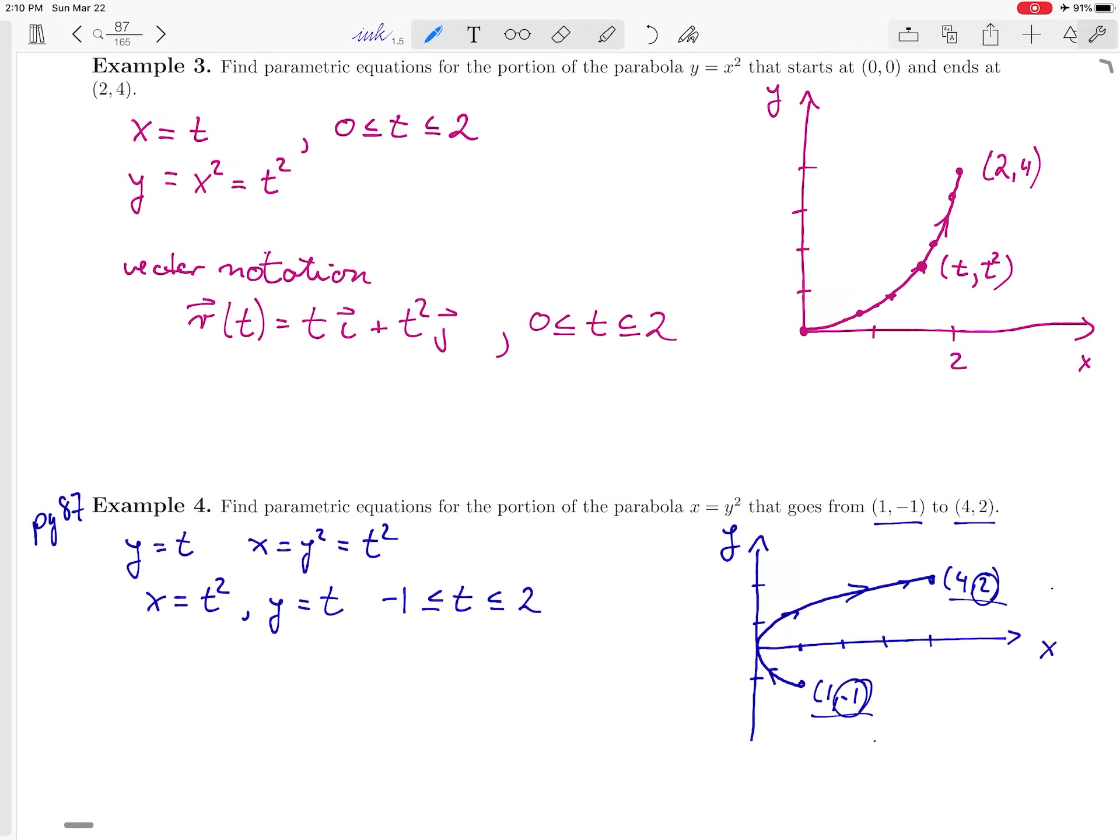I'm going from minus 1 for t to 2. So, we have our curve expressed parametrically and in vector notation, we have r of t is equal to t squared i plus t j and again minus 1 less than or equal to t less than or equal to 2.